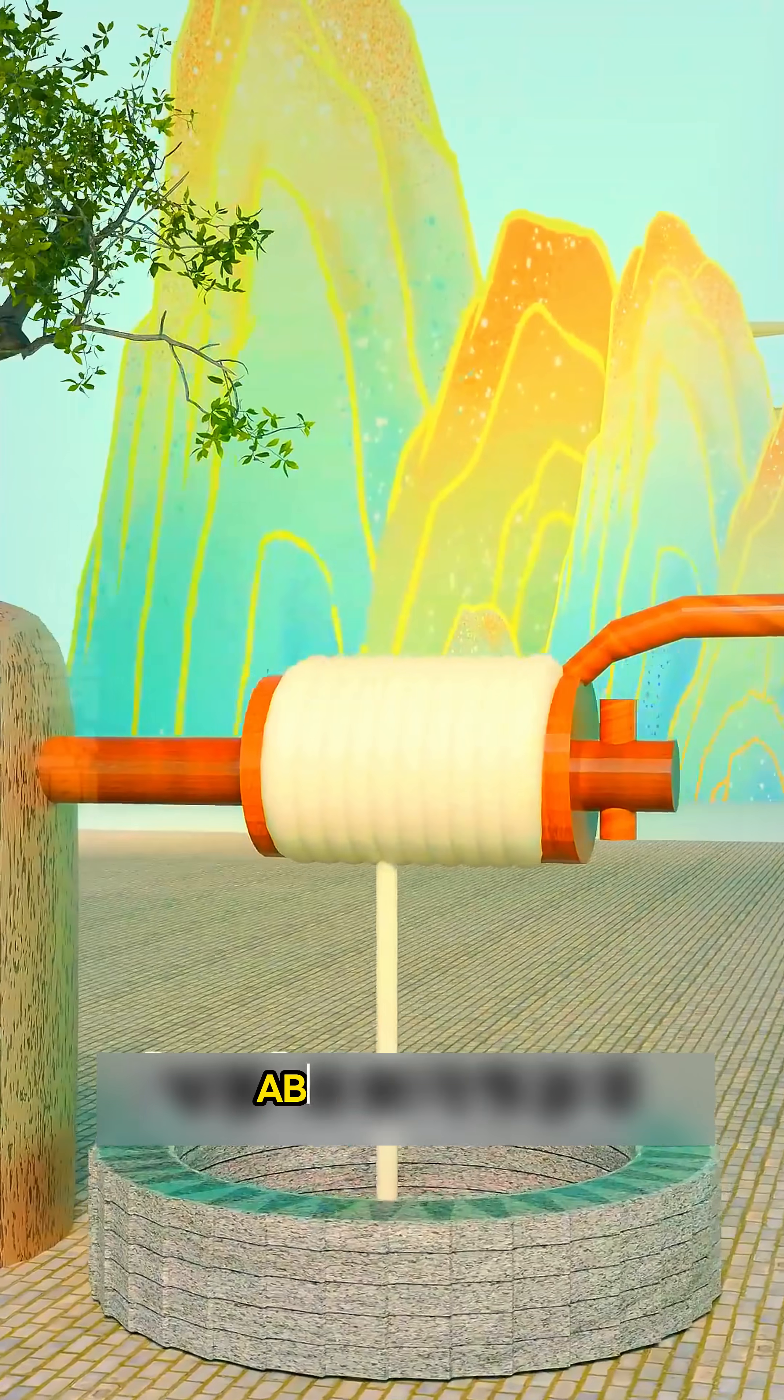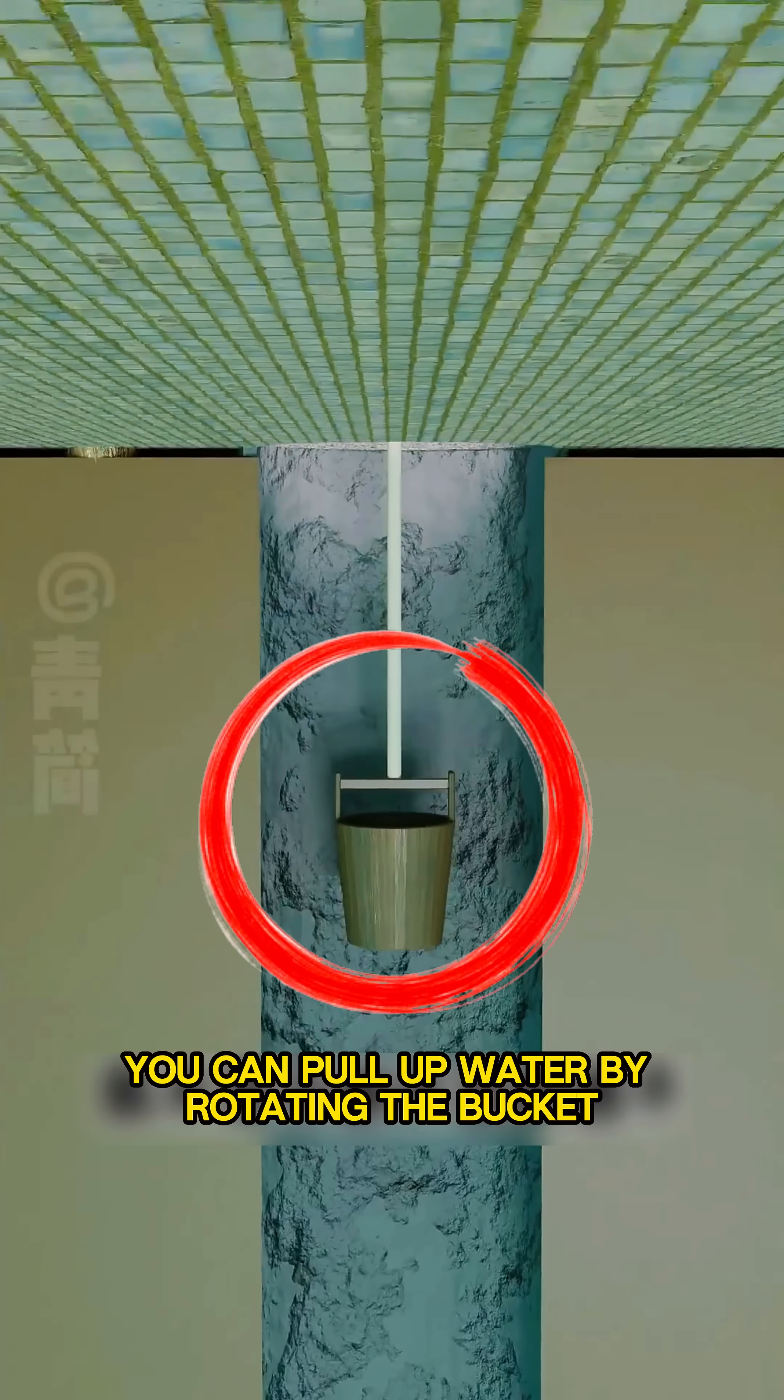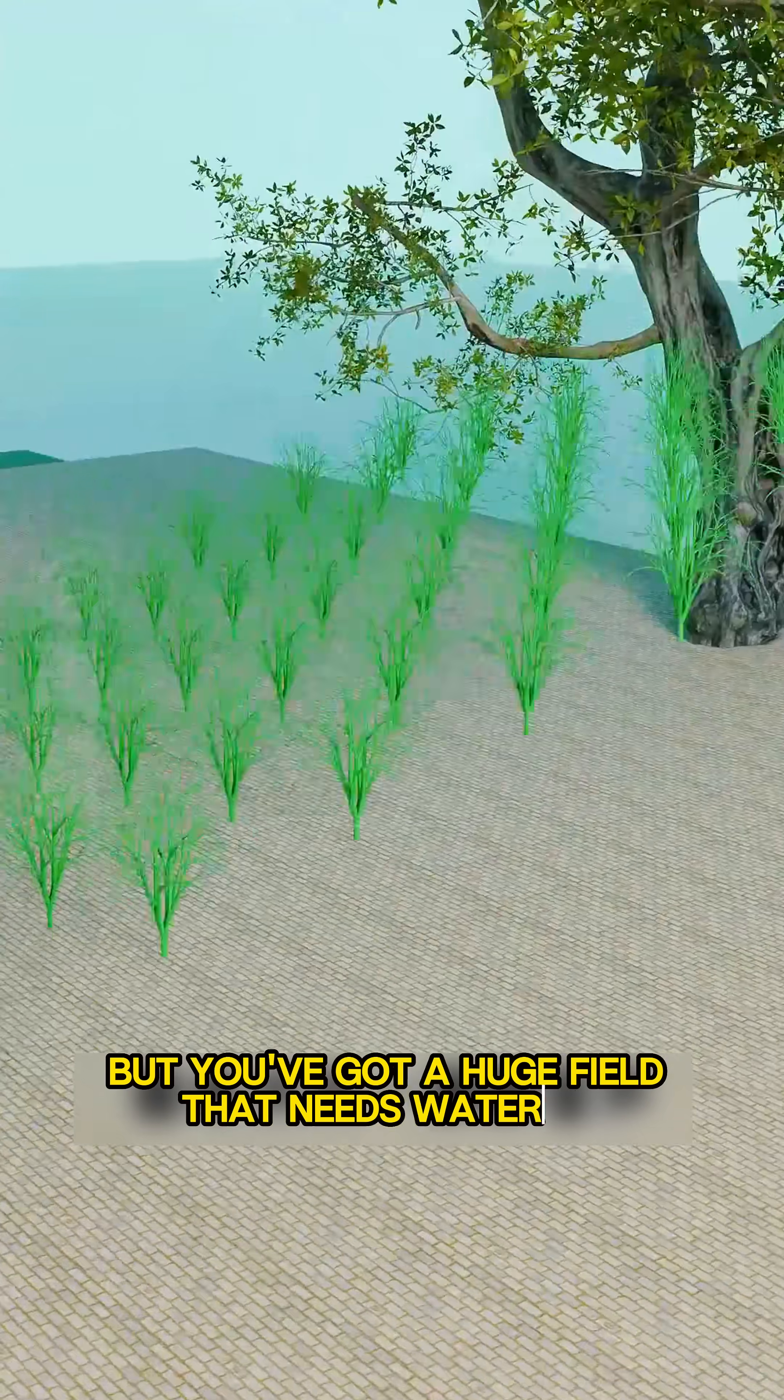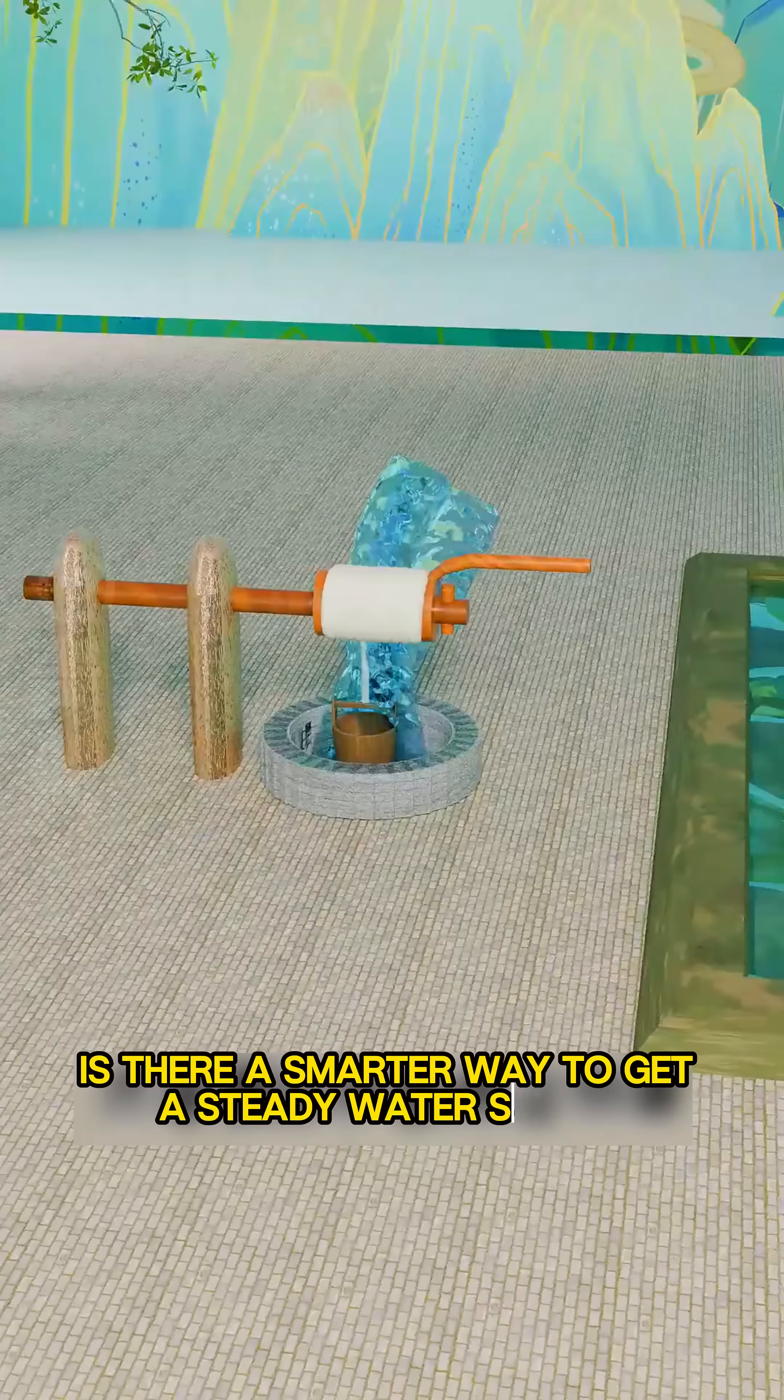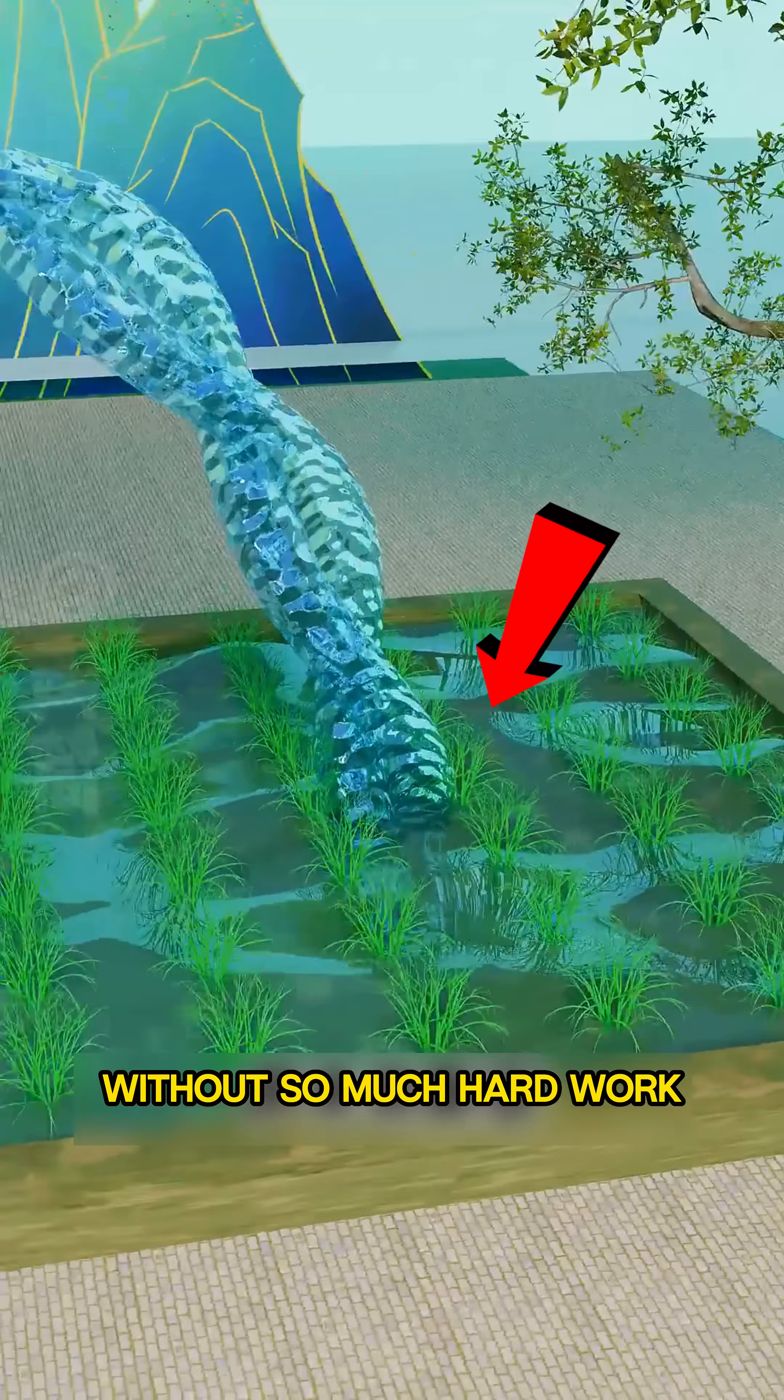If you set up a bucket system with iron bars above a well, you can pull up water by rotating the bucket over and over again. But you've got a huge field that needs watering, and this method takes too much time and effort. Is there a smarter way to get a steady water supply without so much hard work?